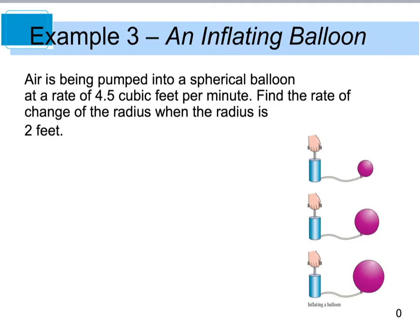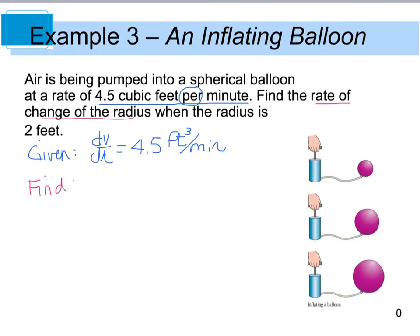The first thing we're going to do is identify what was given. I have 4.5 cubic feet per minute. The word per implies a rate, and cubic feet per minute is a volume. So, I was given dV/dt, which is 4.5 cubic feet per minute. I'm going to find dr/dt when r is equal to 2 feet.